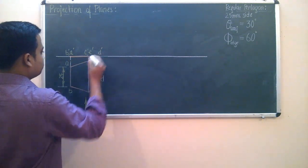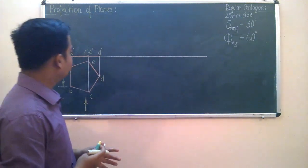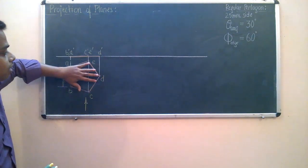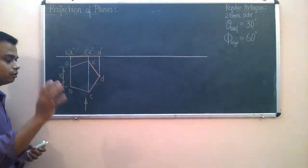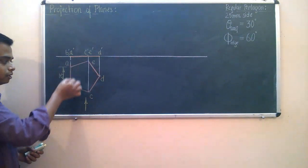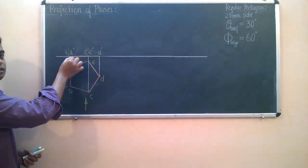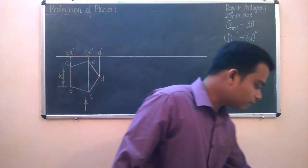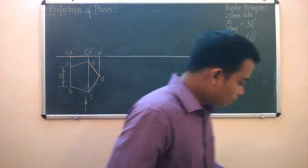Now we are very much interested in inclining the surface. When we incline the surface, you will observe that these three points will go up in the air, whereas this particular edge — the AB edge — will remain intact on the horizontal plane, or it will remain grounded. If it remains grounded, then you can say that it is parallel to the HP.